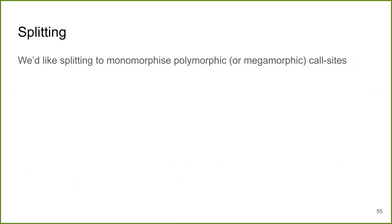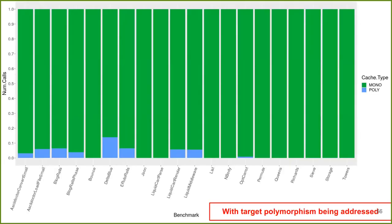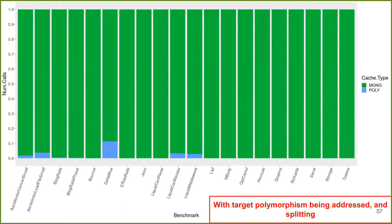We would like splitting to monomorphize polymorphic or megamorphic call sites. When you apply the effect of splitting after type polymorphism is addressed, it further reduces the degree of polymorphism. DeltaBlue remains polymorphic with around 12% of polymorphism, and all the other benchmarks are less than 5%.